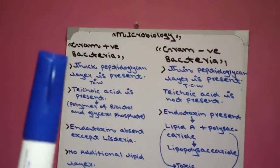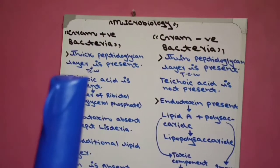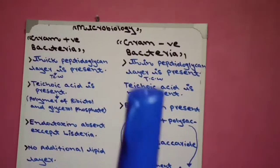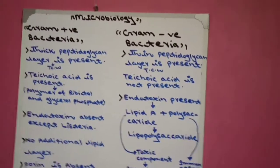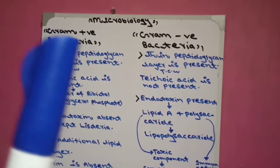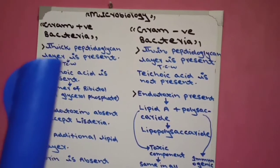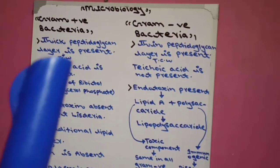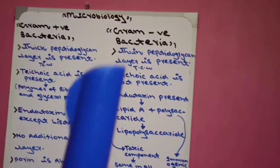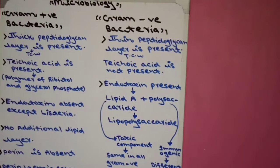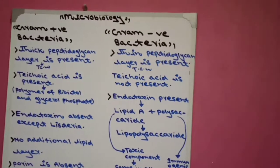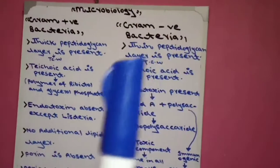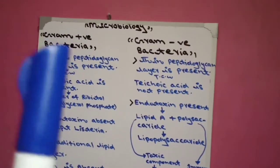The first difference: in gram positive bacteria, a thick cell wall is present; in gram negative bacteria, a thin cell wall is present. This is because in gram positive bacteria, a thick peptidoglycan layer is present, making the cell wall thick. In gram negative bacteria, a thin peptidoglycan layer is present, resulting in a thin cell wall.